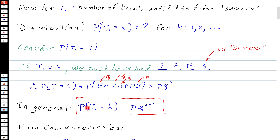In general, the probability that T1 equals K means we've had one success on the Kth trial and K minus one failures before that. So this probability is just P times Q to the K minus one. This distribution is very simple to derive.